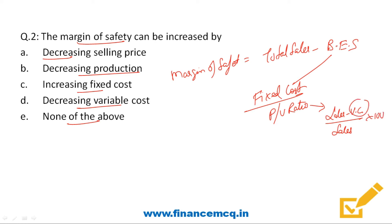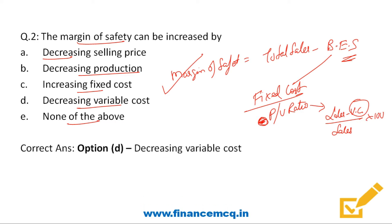A decrease in variable cost will cause an increase in profit volume ratio. Profit volume ratio being the denominator, any increase in it will cause a reduction in breakeven sales, thus causing an increase in margin of safety. So the correct answer is option D — the margin of safety can be increased by decreasing variable cost.